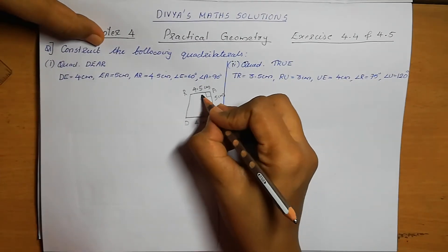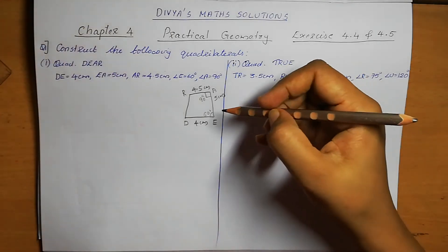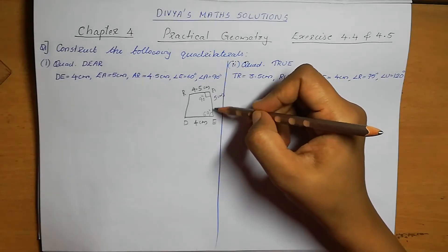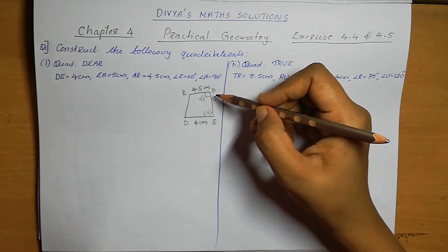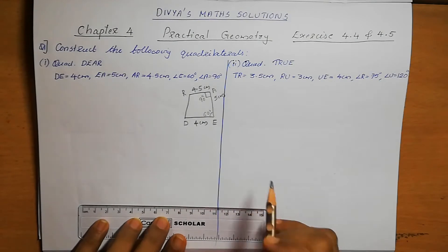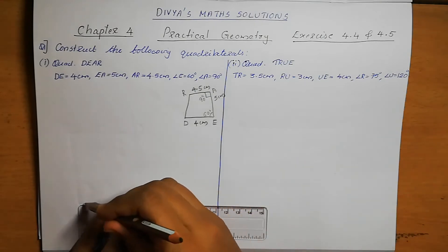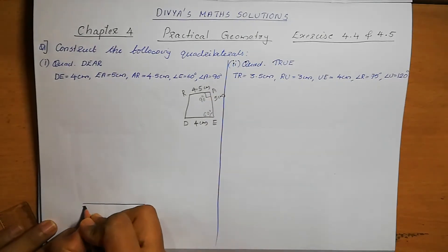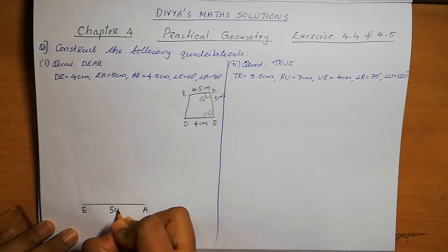We are going to do the construction. Since angle A and angle E are given, we can make AE the base. If we take AE as the base, it is easy to mark the angles. So I am taking AE as the base. AE is 5 cm. EA means AE only — that is 5 cm.